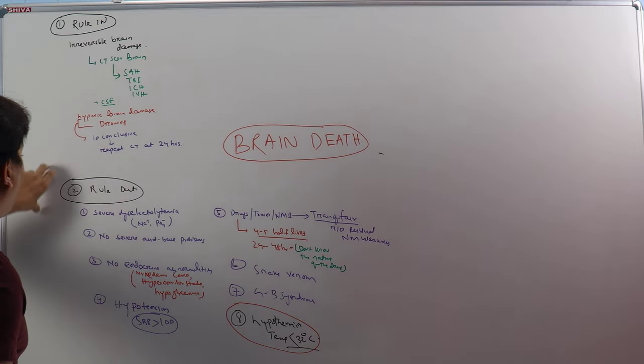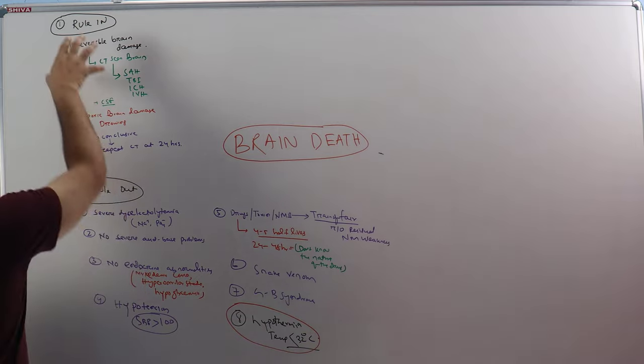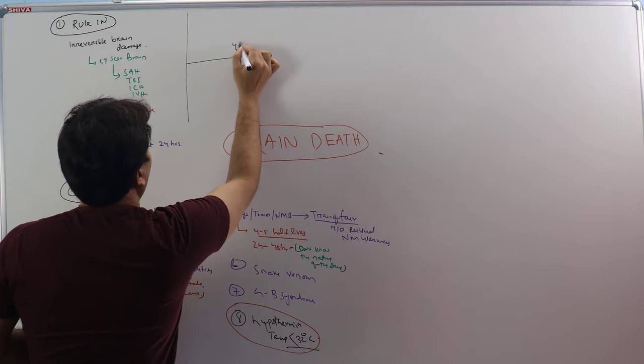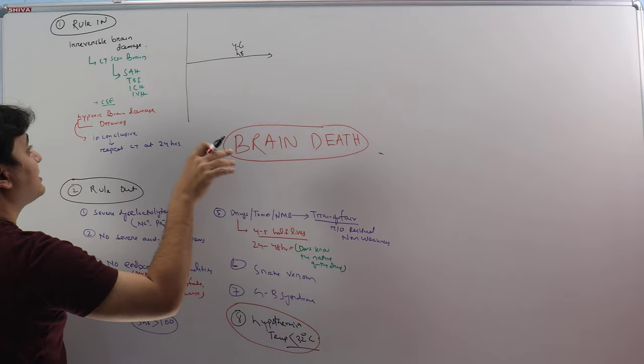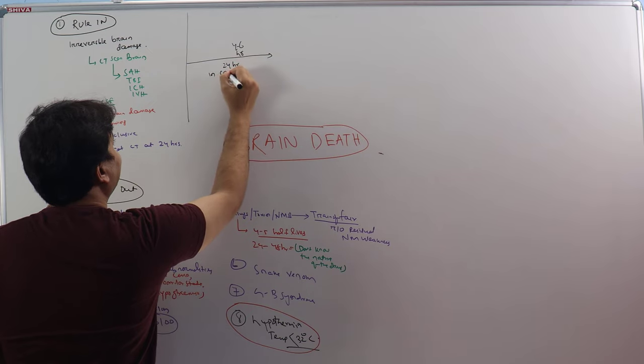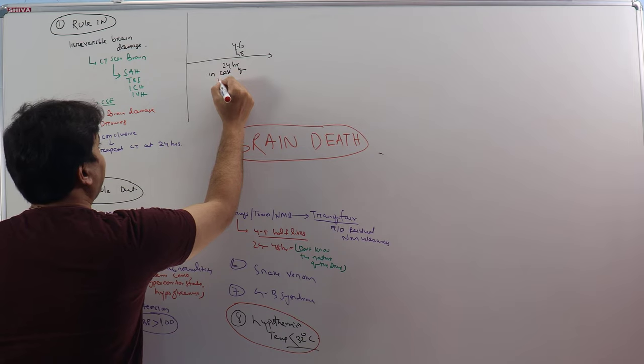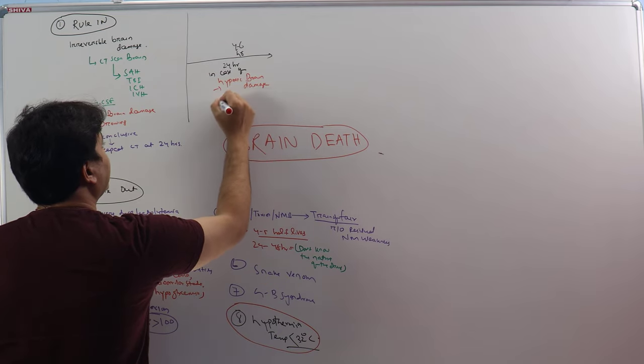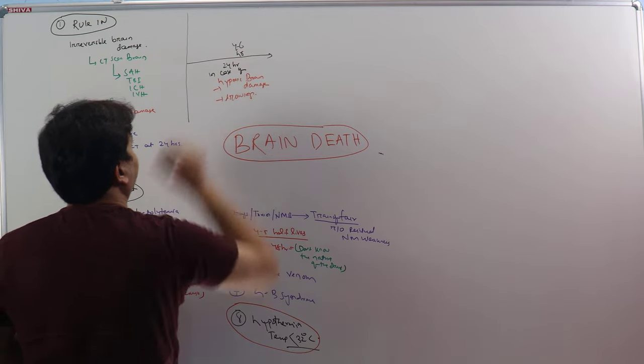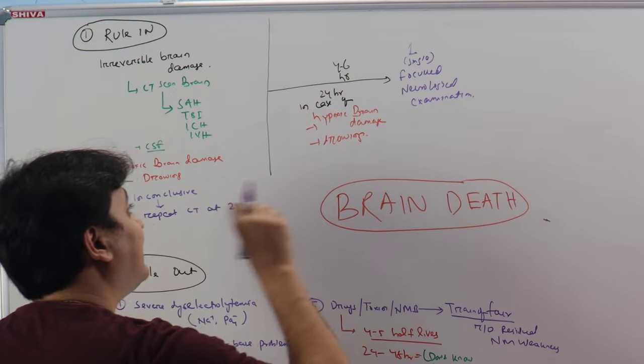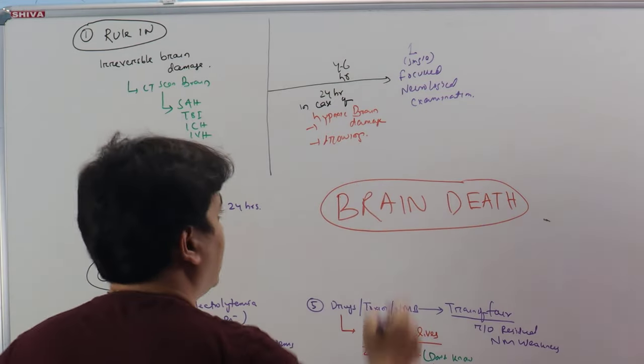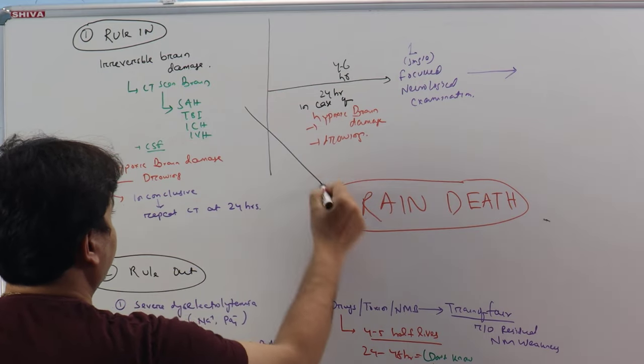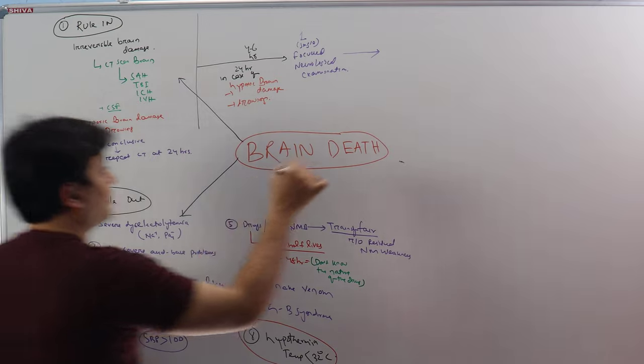First you have rule in, then you have rule out. Now, even if you have done both of these things, you have to wait for at least four to six hours to perform a single focused neurological examination, or that will be 24 hours in case of hypoxic brain damage or in case of drowning. After four to six hours, you can do one single focused neurological examination to diagnose brain damage. What are the examinations? Let's discuss now.